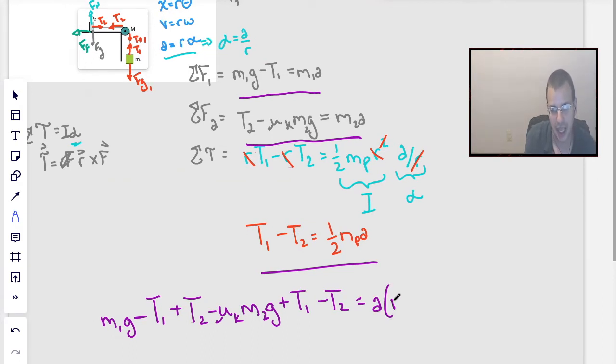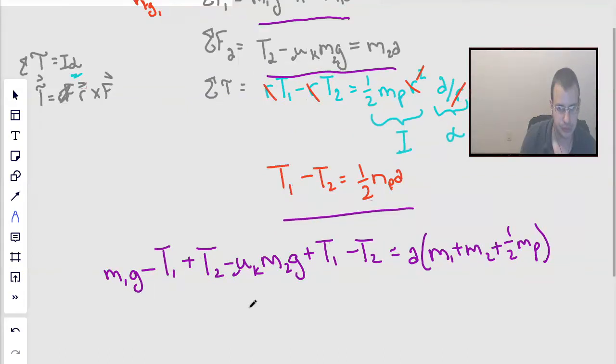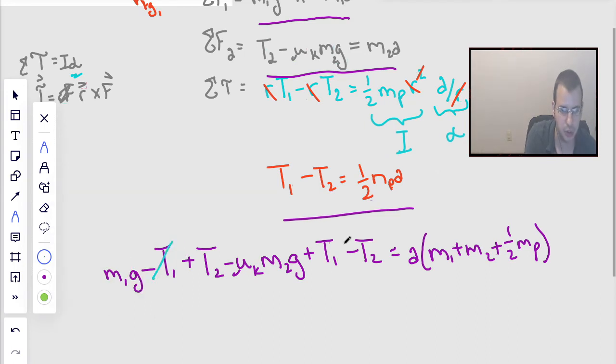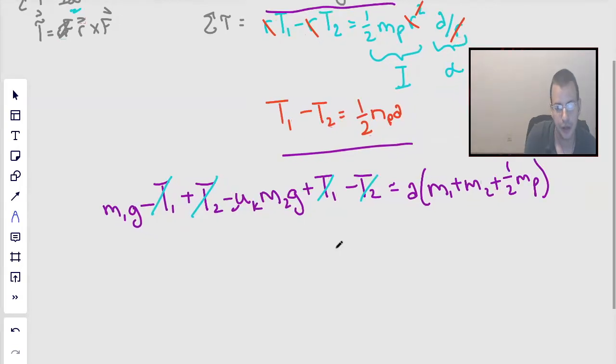Now I'm going to add up all the right sides, except I'm going to factor out the acceleration. So we get A times mass 1 plus A times mass 2 plus A times one half mass pulley. Looking at these, I can see that the tensions all cancel out. Tension 1, tension 1, tension 2, tension 2.